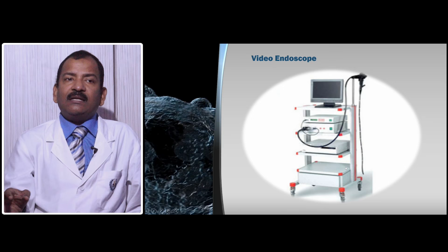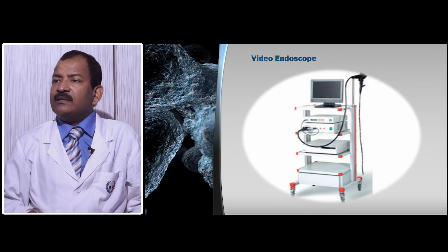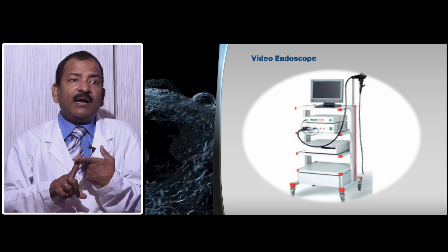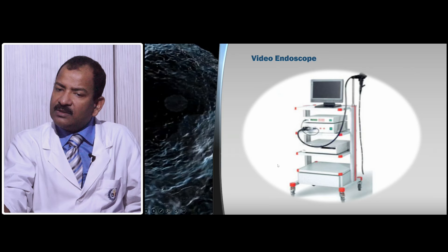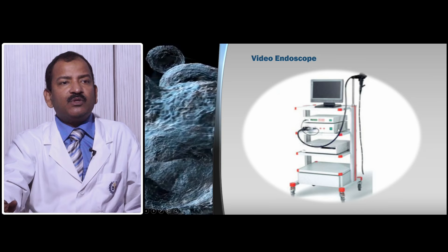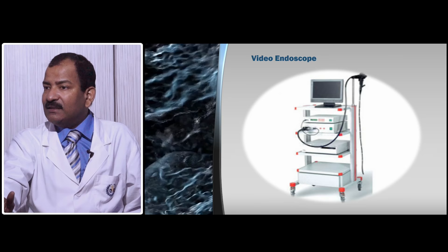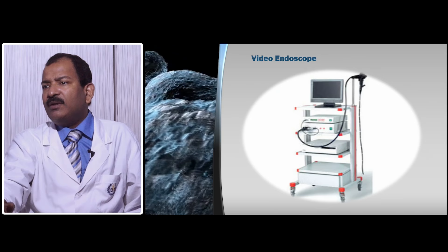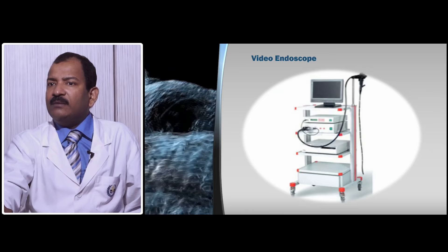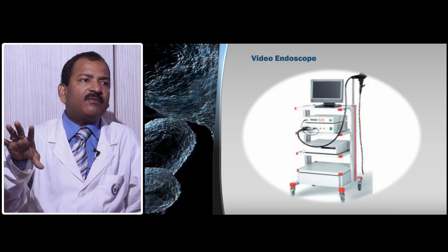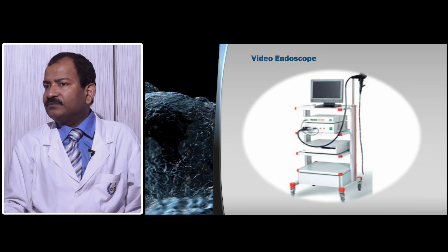The video endoscope is completely digitalized and has chip-on-tip technology, so light fibers are only used to throw light inside, but the image is not taken by fiber optics — it is taken by the CCD (charge-coupled device) at the tip. There is a processor that can do digital enhancement: if light is low you can decrease shutter speed, if light is more you can increase it. You also have the advantage of narrow band imaging (NBI), where different spectra of light can highlight neo-vascularization and cancer tissue.